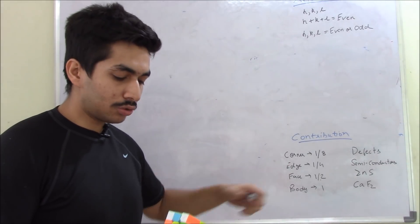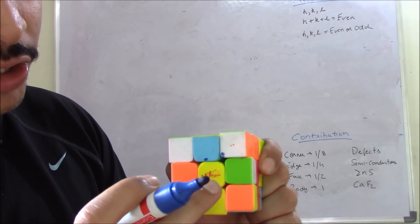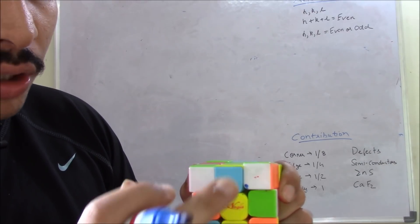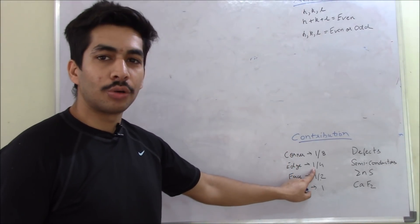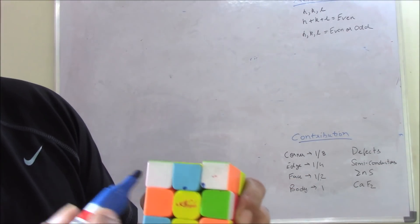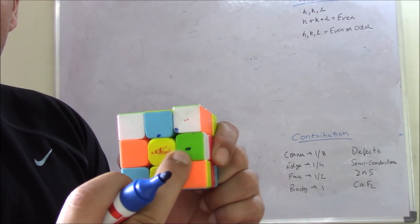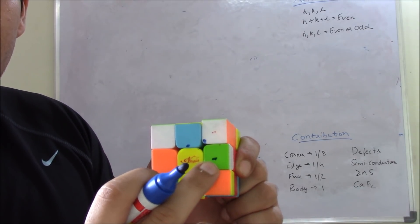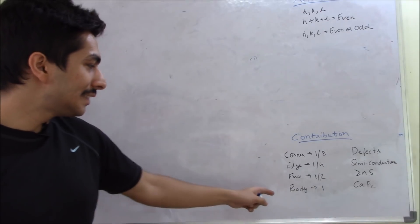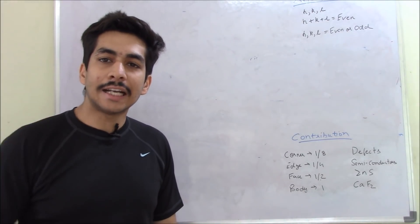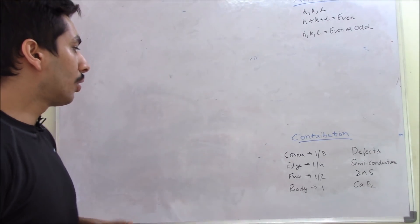The edge atom is shared by this yellow cube and blue cube — two visible cubes — plus two more in front of them, making four cubes total, giving a contribution of 1/4. For a face-centered atom, it sits in the center of a face and is shared by two cubes — the green cube and one cube in front of it — so contribution is 1/2. A body-centered atom sits right inside the cube and is not shared by any other cube, so its contribution is 1.